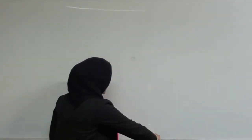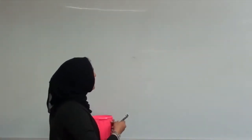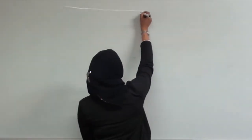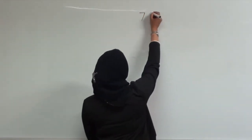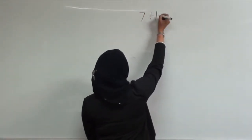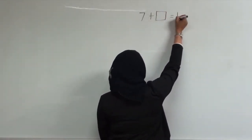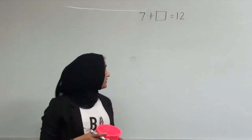And how would we work this out? So I'll have to think about this and show it to you as a number sentence. I started with 7 cubes. I've added some more cubes. And I'm now left with 12 cubes in my pot.